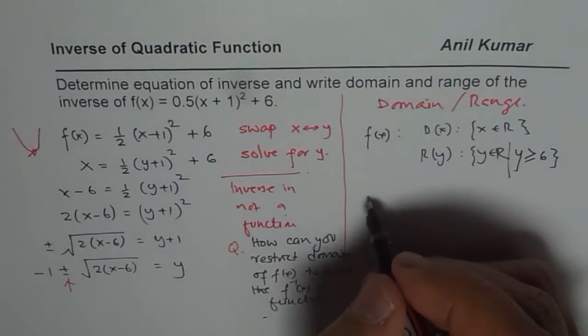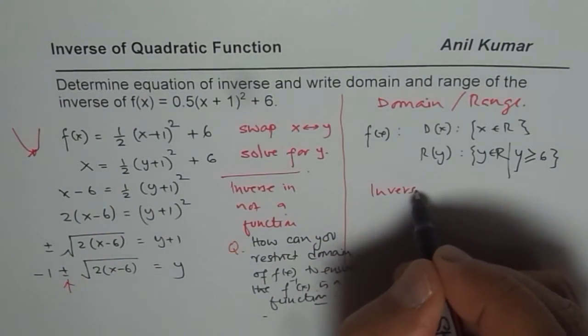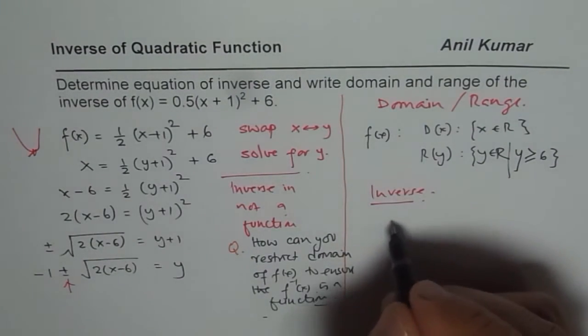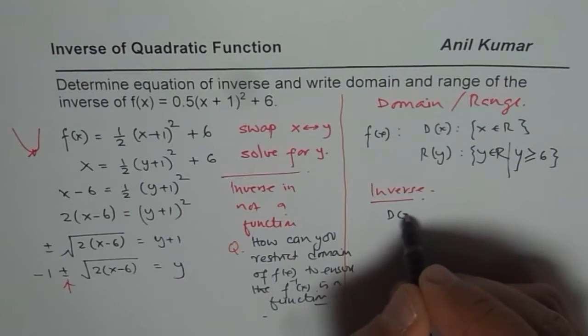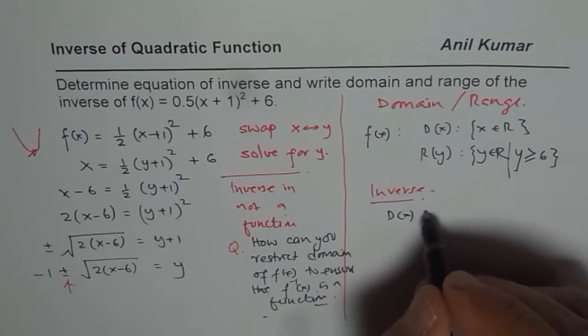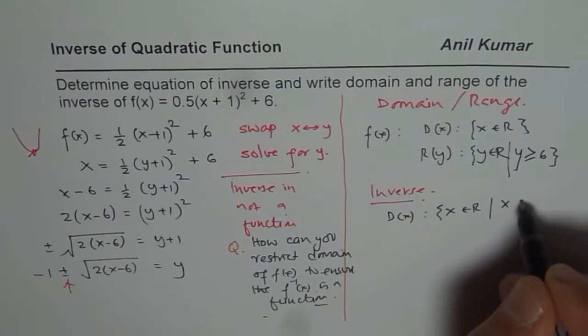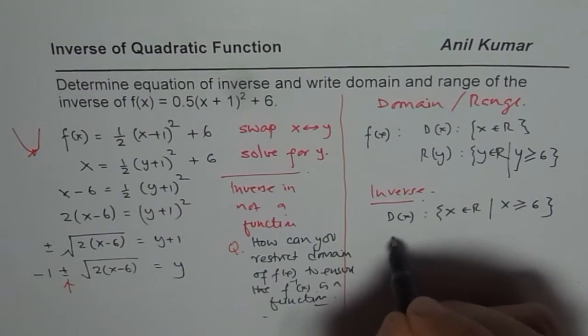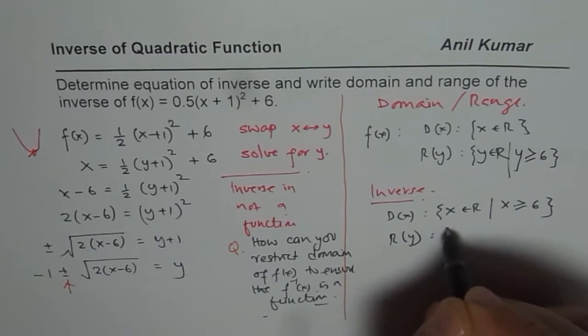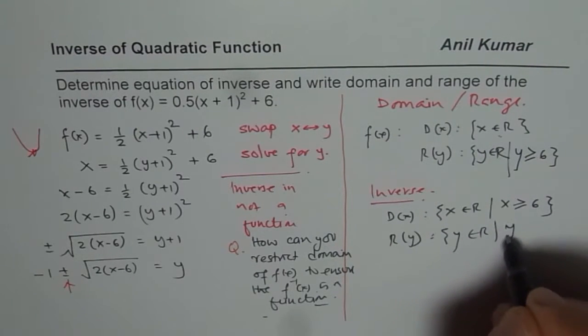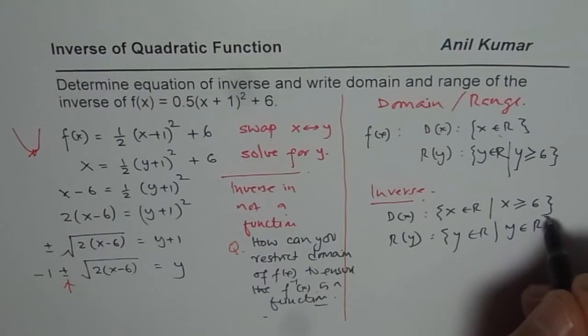Now let us consider the inverse. Now in inverse, always these things switch. So in inverse, the domain should be that part. So we will first write x belongs to real numbers where x is greater than or equal to 6.